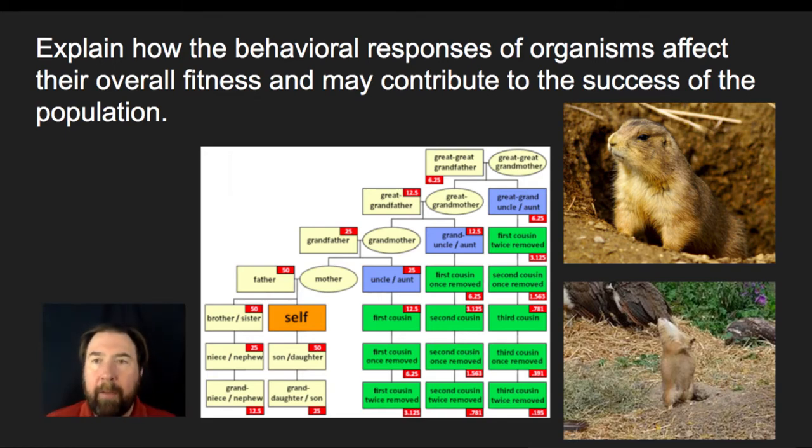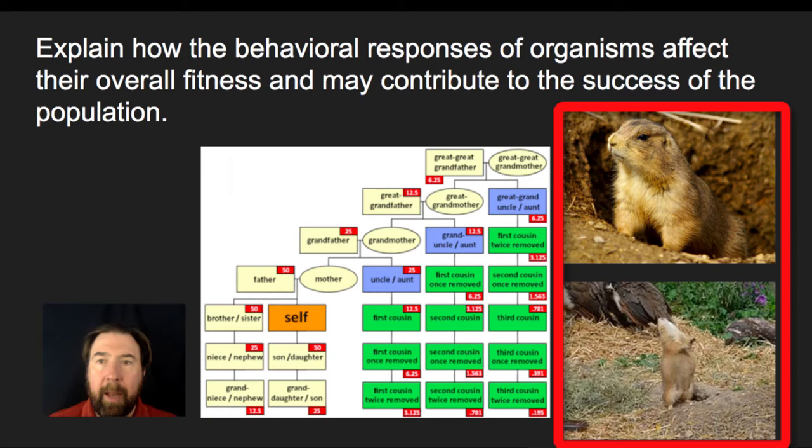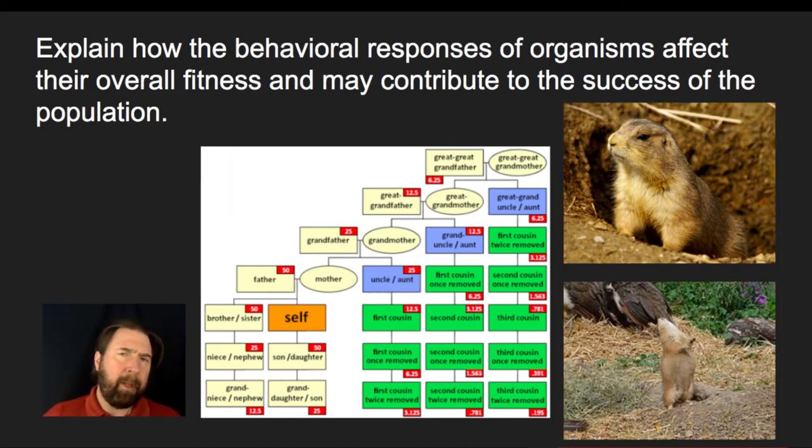But in a population sense, we have examples where you have something like this prairie dog here. What this prairie dog has done is observed a predator, and prairie dogs are known to have very specific warning howls for the different types of predators that could be coming towards them. And they will make all of this noise. That might seem a little counterintuitive. You are an animal, you see a predator, and all of a sudden you stand up and you make all of this noise.